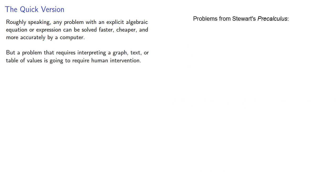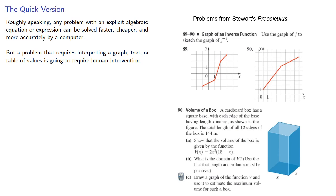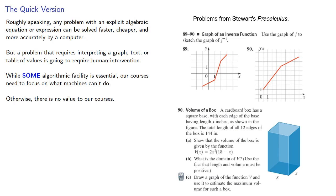But a problem that requires interpreting a graph, text, or table of values is going to require human intervention. While some algorithmic facility is essential, our courses need to focus on what machines can do. Otherwise, there is no value to our courses and no reason to take them.